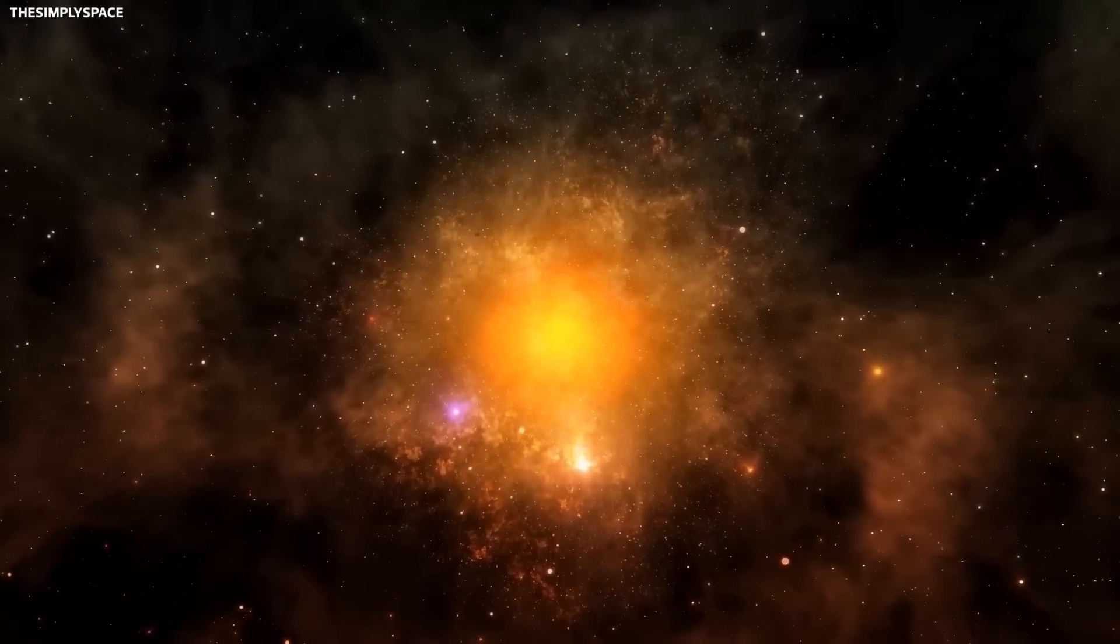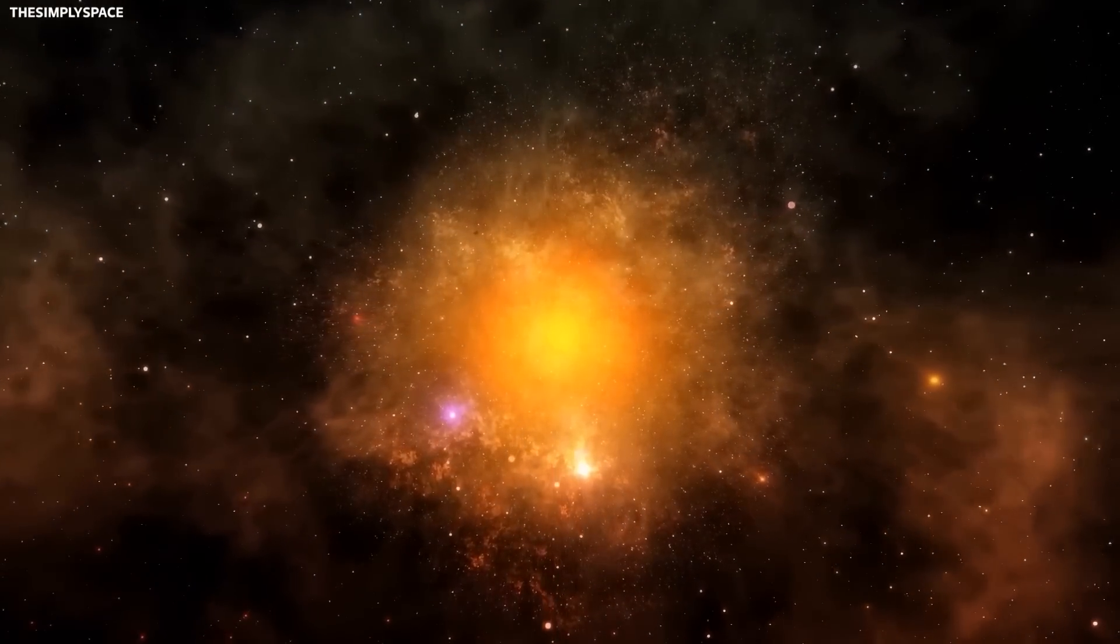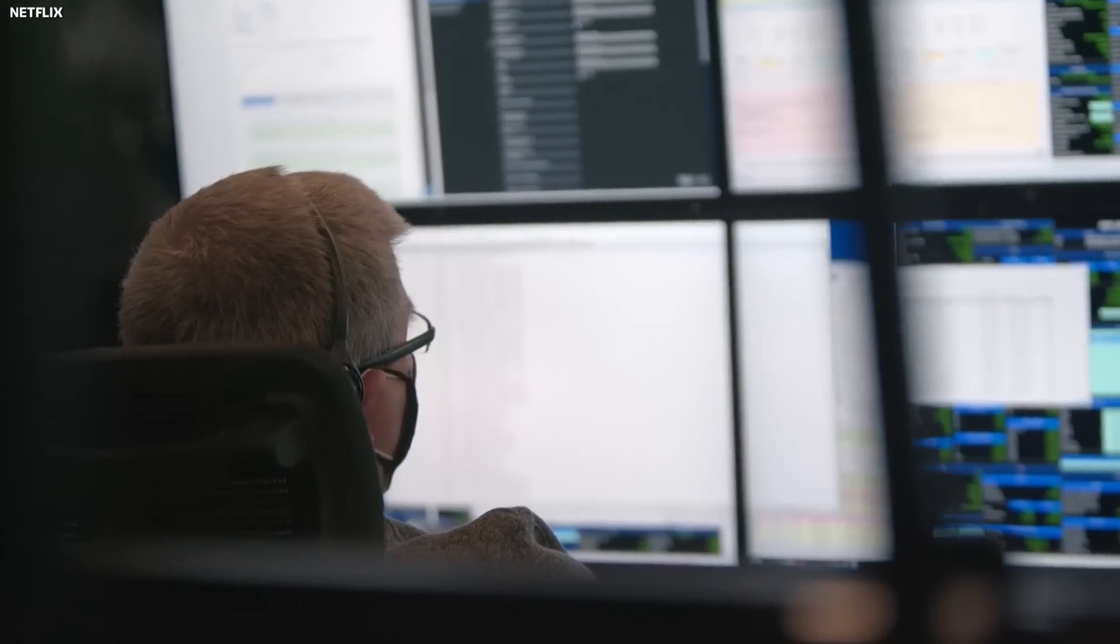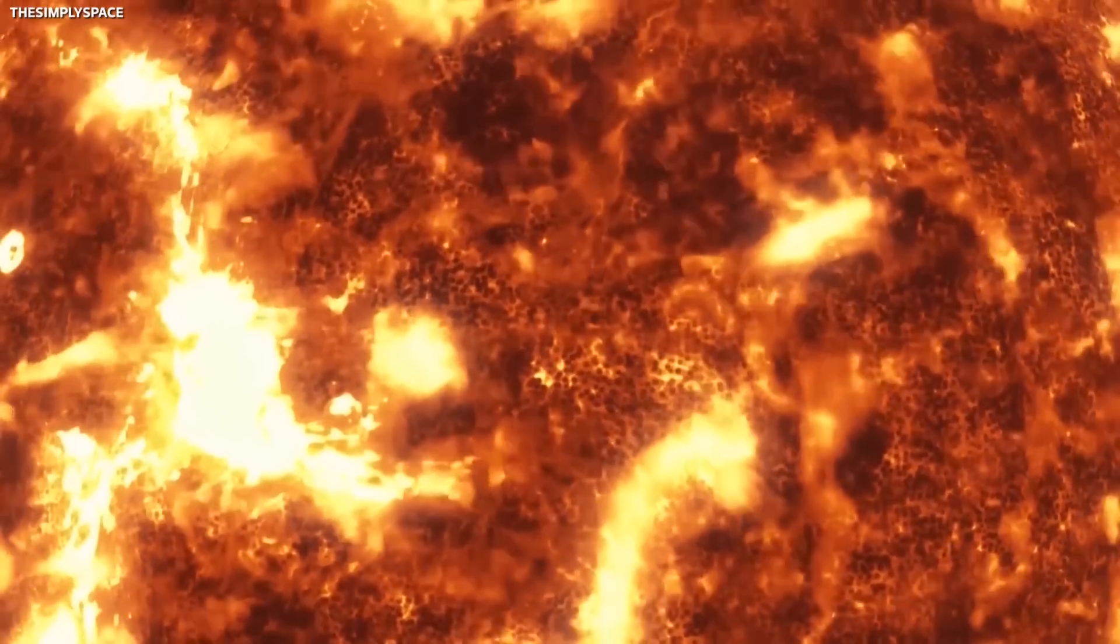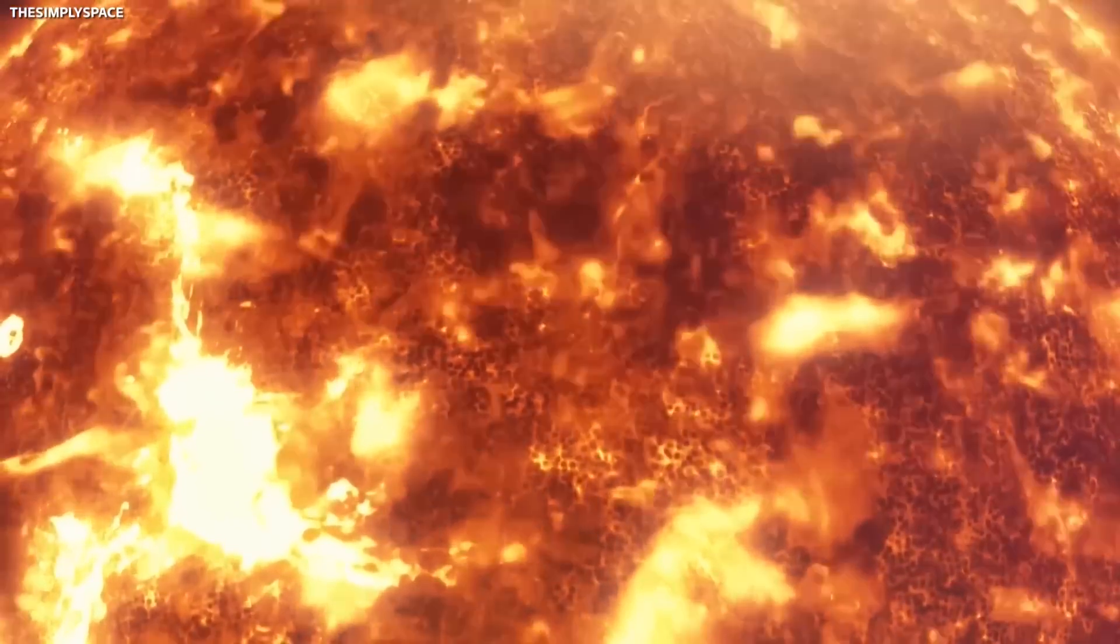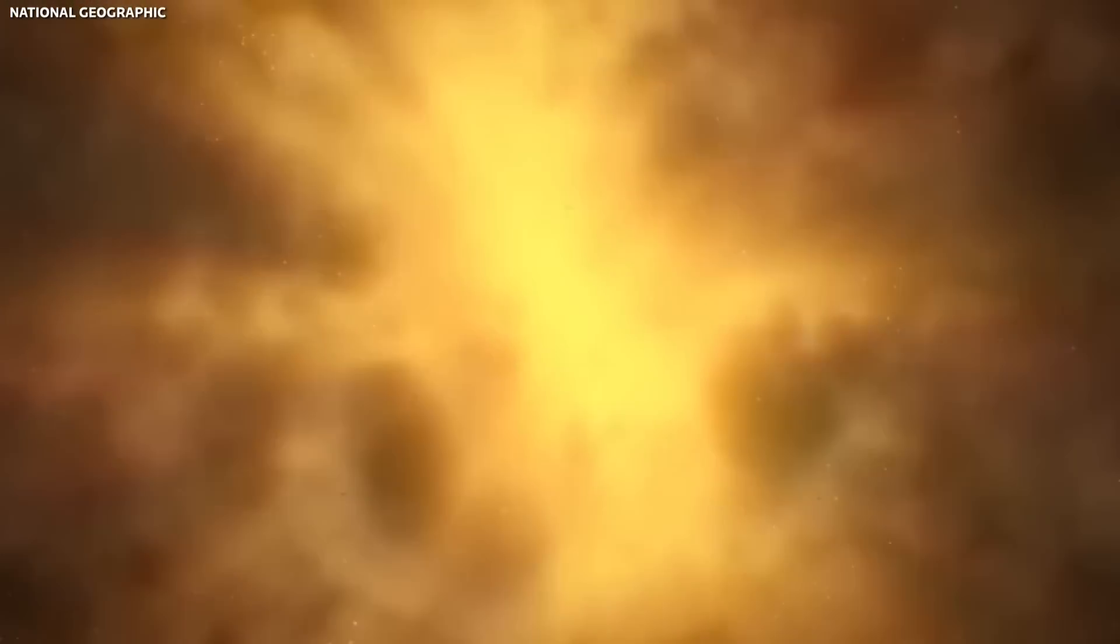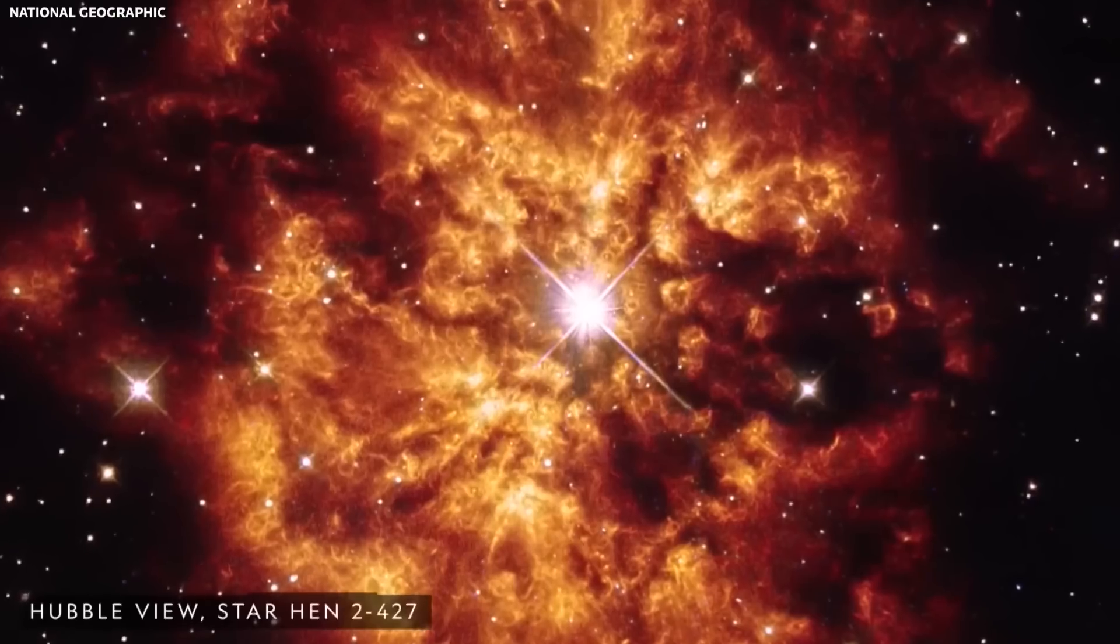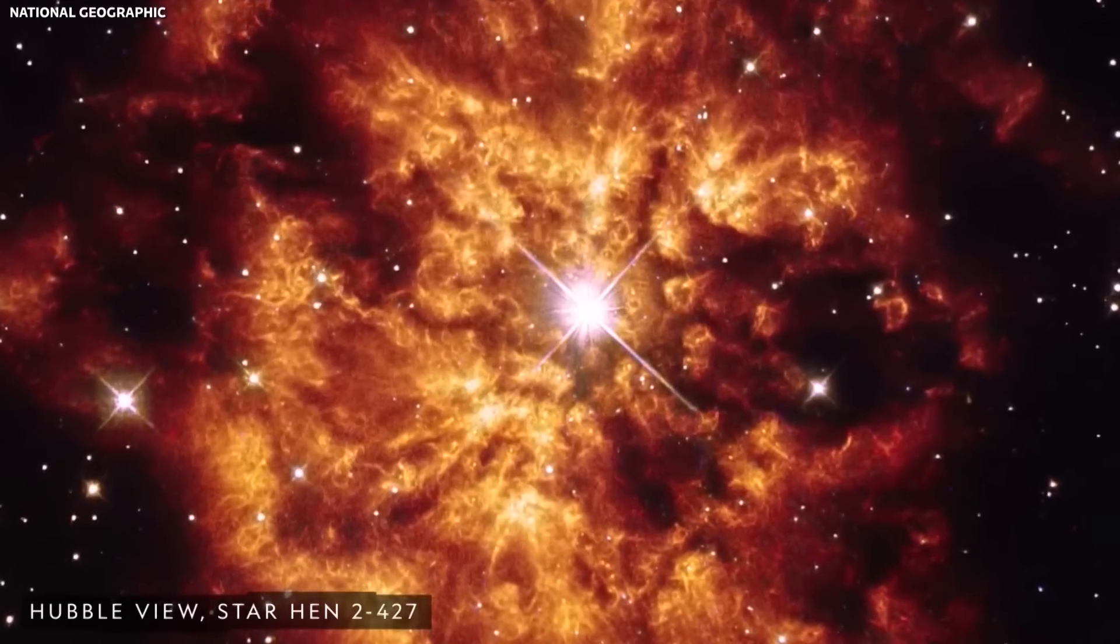This material can form dense clouds that can, at times, block the star's light, leading to perceived dimming from our vantage point. In fact, recent observations have shown that Betelgeuse has been releasing an increased amount of material, leading to the formation of such dust clouds. This process is a natural part of a star's life cycle, especially for red supergiants like Betelgeuse.